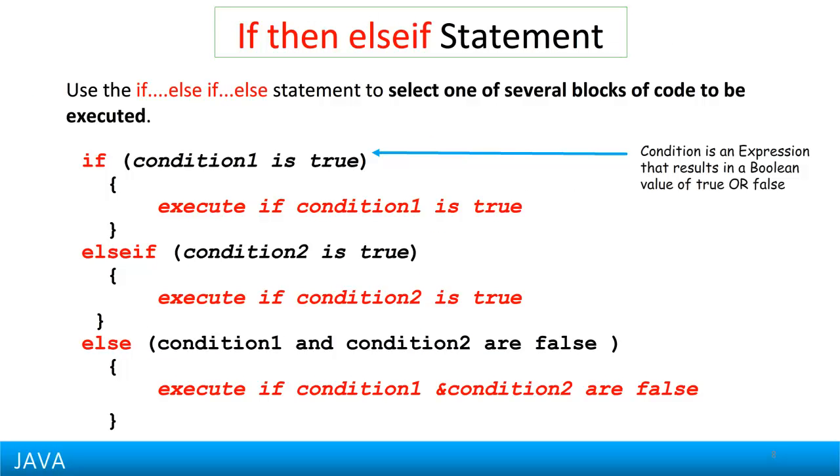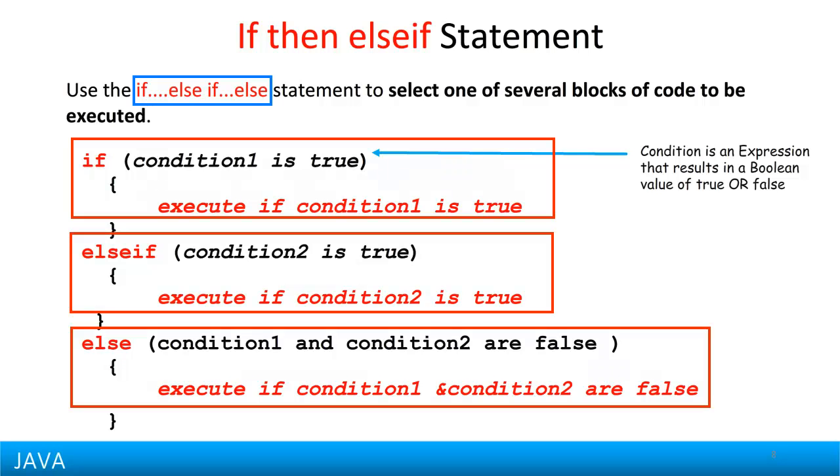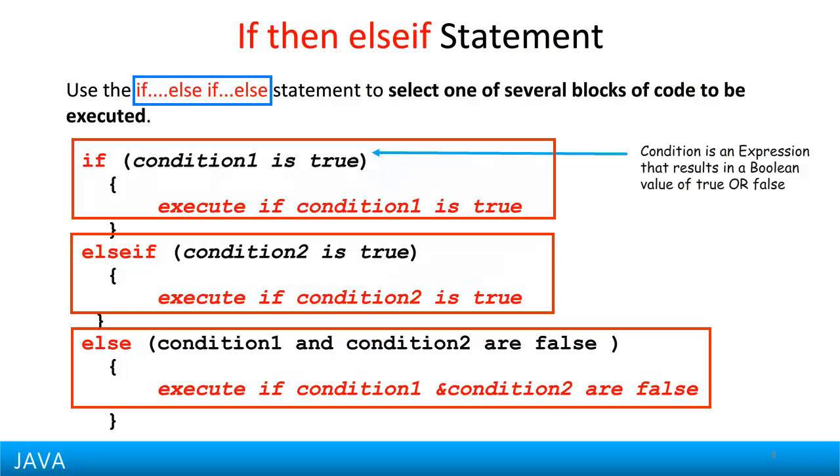The IF THEN ELSE IF statement can be used to chain together a series of IF THEN statements. If we want to check for multiple conditions and have different sets of code execute when different of these conditions are true, then we can use this IF THEN ELSE IF statement. Just like the IF ELSE, all the statements in this IF THEN ELSE IF statement are mutually exclusive. That is, for any particular condition, only one of them will execute.